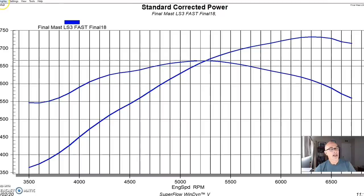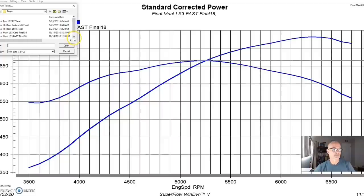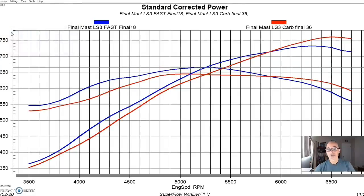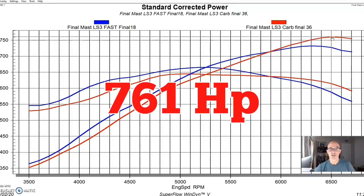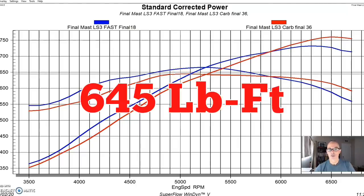Here's what happened after we installed the Mast single-plane intake, and this was actually run with a carburetor and not fuel injection, although the fuel injection was used to control the timing on this. But equipped with the single-plane intake, this combination produced 761 horsepower. Peak torque dropped down to 645 foot-pounds.